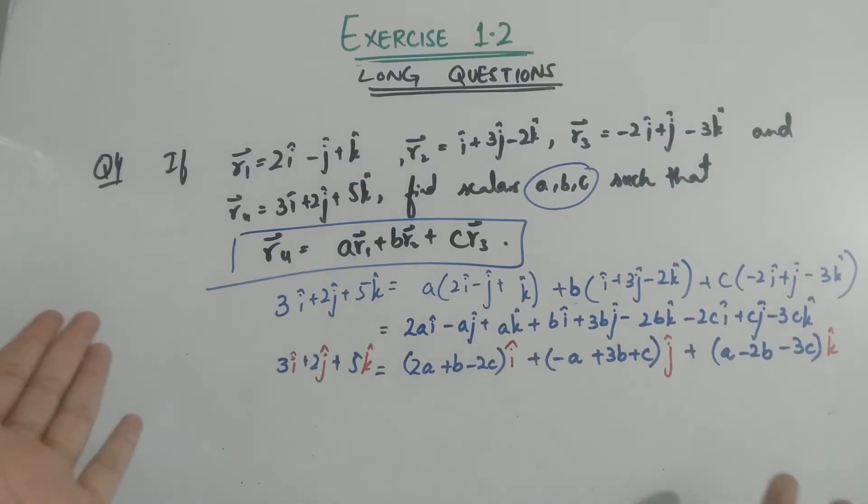We will compare the coefficients of i, which we call comparing coefficients. So 2A plus B minus 2C equals 3. This is equation one.